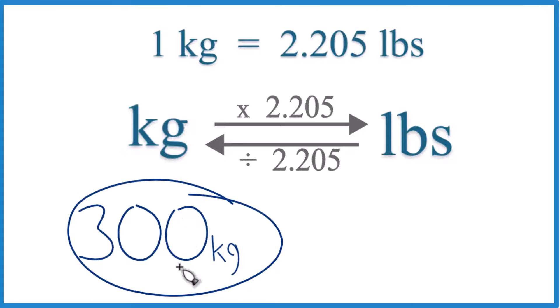So let's convert 300 kilograms here to pounds. So one kilogram, that equals 2.205 pounds.